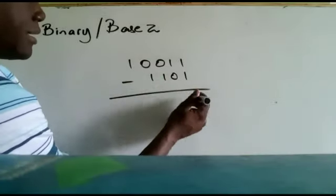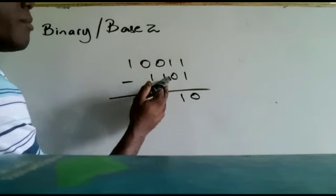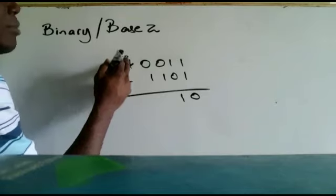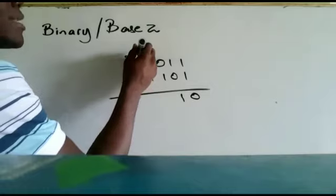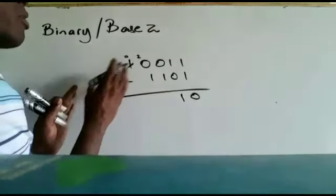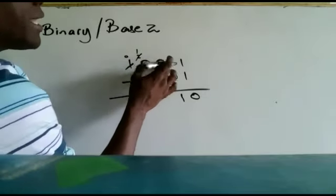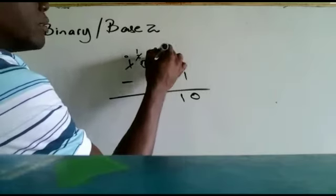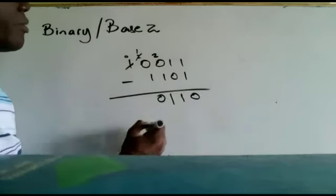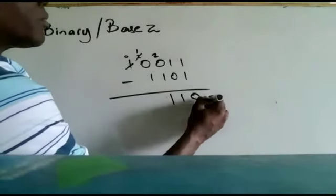Let's subtract: 10011 minus 1101 in base 2. Starting from the right: 1 minus 1 is 0. 1 minus 0 is 1. Then 0 minus 1 — we have a problem, so we borrow. The next column has nothing, so we go further left, borrow that 1, put 0 there, and it becomes a set of two as it moves right. We borrow again, leaving 1, and in the current column we now have 2 minus 1, which is 1. Then 1 minus 1 is 0 — and the leading zero has no value, so our answer is 110.